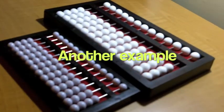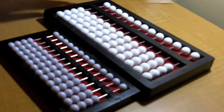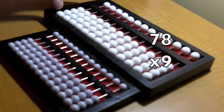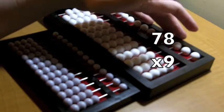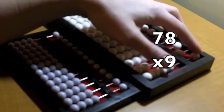For the problem 78 times 9, I'll set 9 which is the bottom factor on the far left and 78 which is the top factor on the far right.